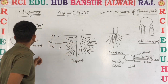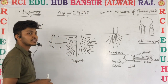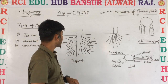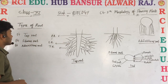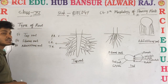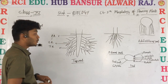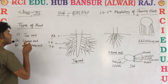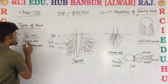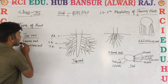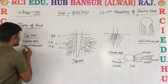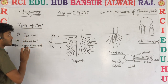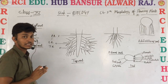Today we are talking about types of roots. There are 3 types of roots. Number 1 is tap root. Number 2 is fibrous root. Number 3 is adventitious root. First we are talking about tap root.